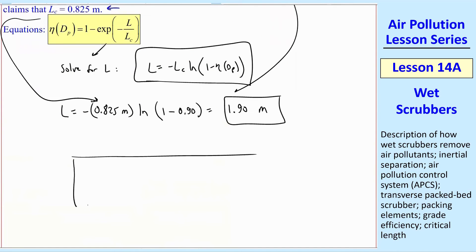So what it means is that this packed bed scrubber would have to have a length L equal to 1.90 meters when you have that certain amount of water coming in and out, and you have this certain amount of air coming in and coming out with particles, and you have all these packing elements in there. In this case, LC is a little less than half of L.